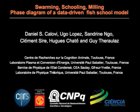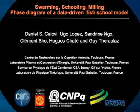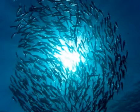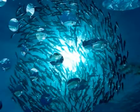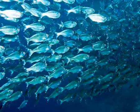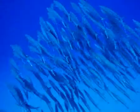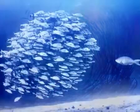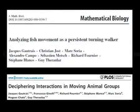Swarming, Schooling, Mealing Phase Diagram of a Data-Driven Fish School Model. Fish schools are able to display some amazing collective patterns in nature. These patterns arise naturally from their interactions and are linked to behaviors such as migration, feeding, predator evasion, etc.